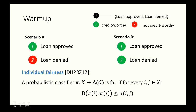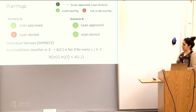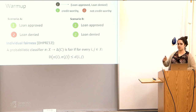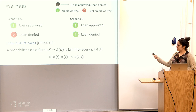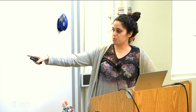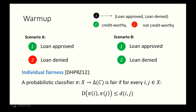Formally, we're going to be talking about probabilistic classifiers — mappings from the input space to a distribution over the outcome space. We say that such a classifier is individually fair if, for any two individuals, this constraint holds: if two individuals are similar with respect to this task-specific metric, lowercase d, then their outcome distributions should be similar. In this example, the metric was whether they're both credit-worthy, and the constraint was that if they're both credit-worthy, they should both be accepted or both denied the loan.